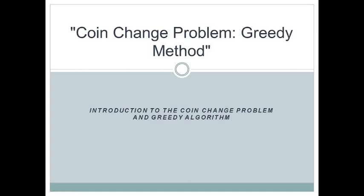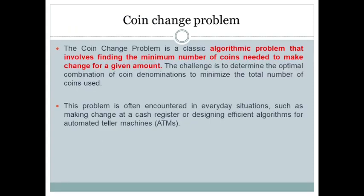The coin change problem is one of the most popular problems in algorithm design. There are several strategies available to solve this problem, and one of the most famous strategies is the greedy method. The problem statement says that the coin change problem is a classic algorithmic problem that involves finding a minimum number of coins needed to make change for a given amount.